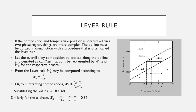The fraction of one phase is computed by taking the length of the tie line from the overall alloy composition to the phase boundary for the other phase, divided by the total tie line length. The fraction of the other phase is determined the same way. If phase percentages are desired, each phase fraction is multiplied by 100. When the composition axis is in weight percent, the phase fractions computed are mass fractions. Tie line segment lengths may be determined by direct measurement or by subtracting compositions from the composition axis.